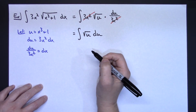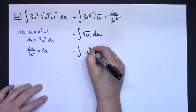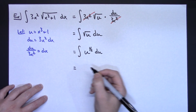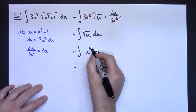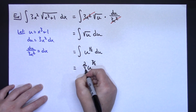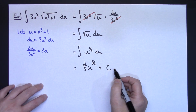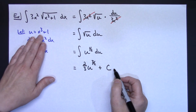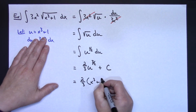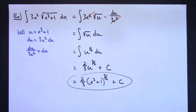Sitting as a square root doesn't make integration easy, so I'll rewrite this as a power: the integral of u to the 1/2 du. Now I can add 1 to the exponent and multiply by the reciprocal. Adding 1 gives me 3/2 as my exponent, and multiplying by the reciprocal gives 2/3 in front. So I have 2/3 u to the 3/2 plus c. Substituting back in, my final answer is 2/3 times x to the third plus 1 raised to the 3/2, plus c.